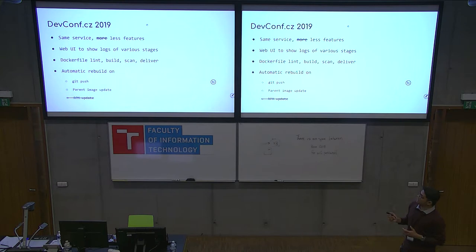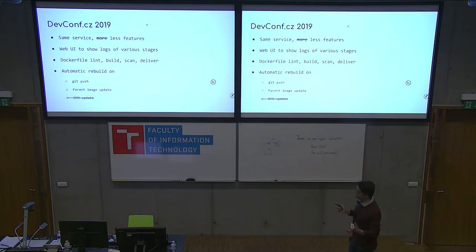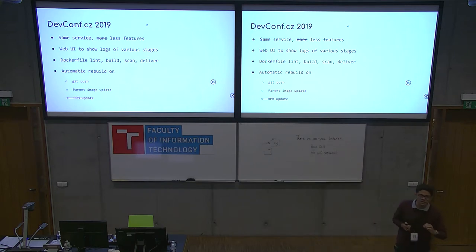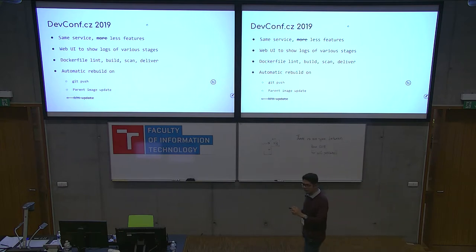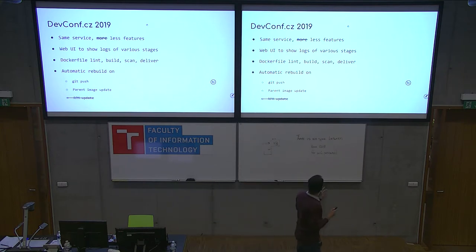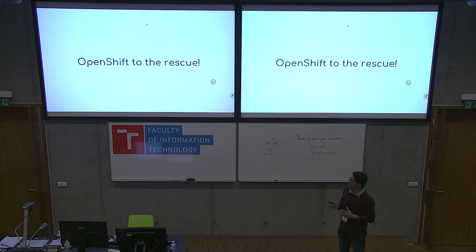In DevConf 2019, what we have is the same service — minus the RPM-triggered rebuild feature, which we didn't have bandwidth for during the architecture change. But we are now sending emails with very minimal information — just a link to your repository where you can look at logs for all stages: linting, scanning, building, everything. The rest remains as is.